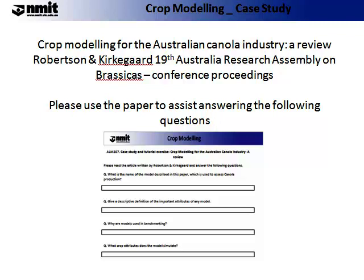This is a paper written by Robertson and Kirkard for the 19th Australian Research Assembly on Brassicas as a conference paper. These questions will help you establish the learning outcomes required of this documentation and hopefully give you an industry-specific case study for Australia and canola. Please pause the lecture now so that you can attempt the questions and read the case study.